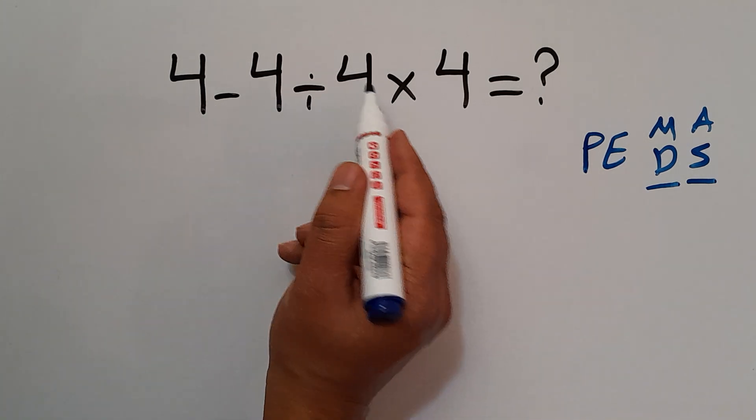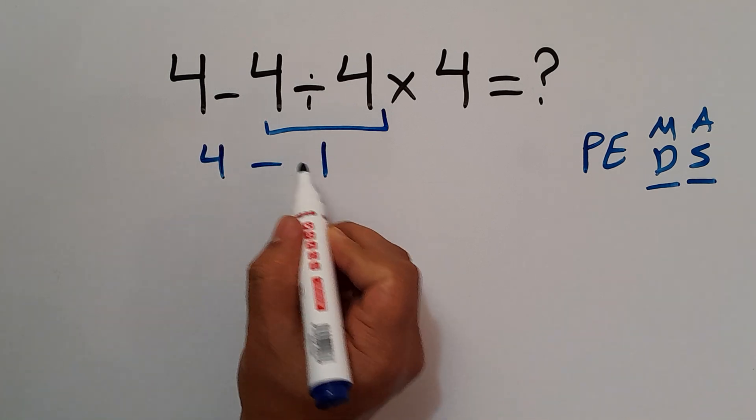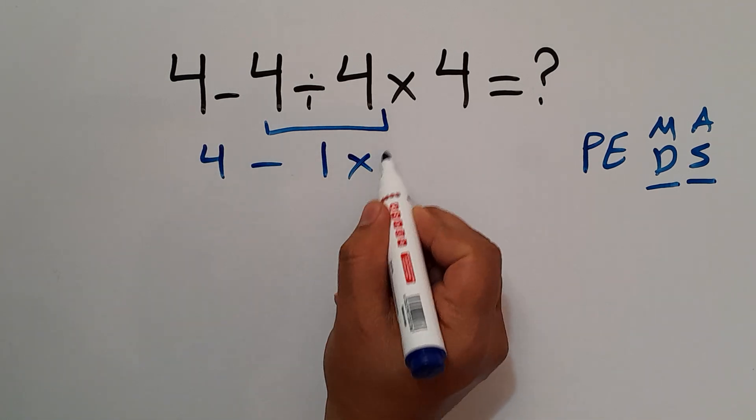4 divided by 4 gives us 1. So we have 4 minus 1, then times 4.